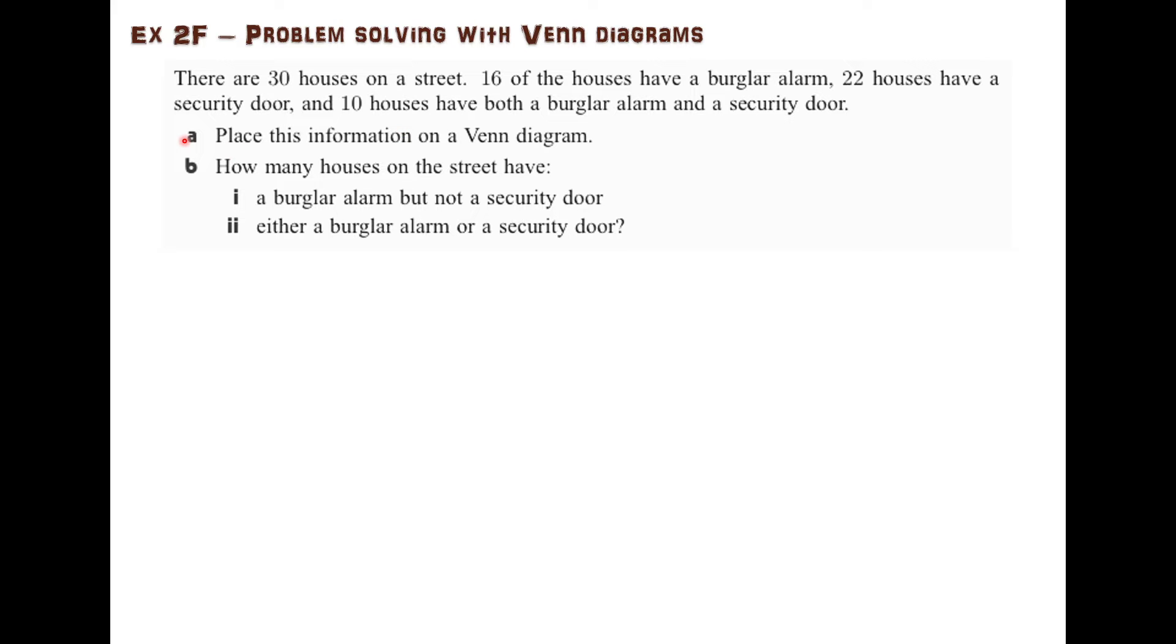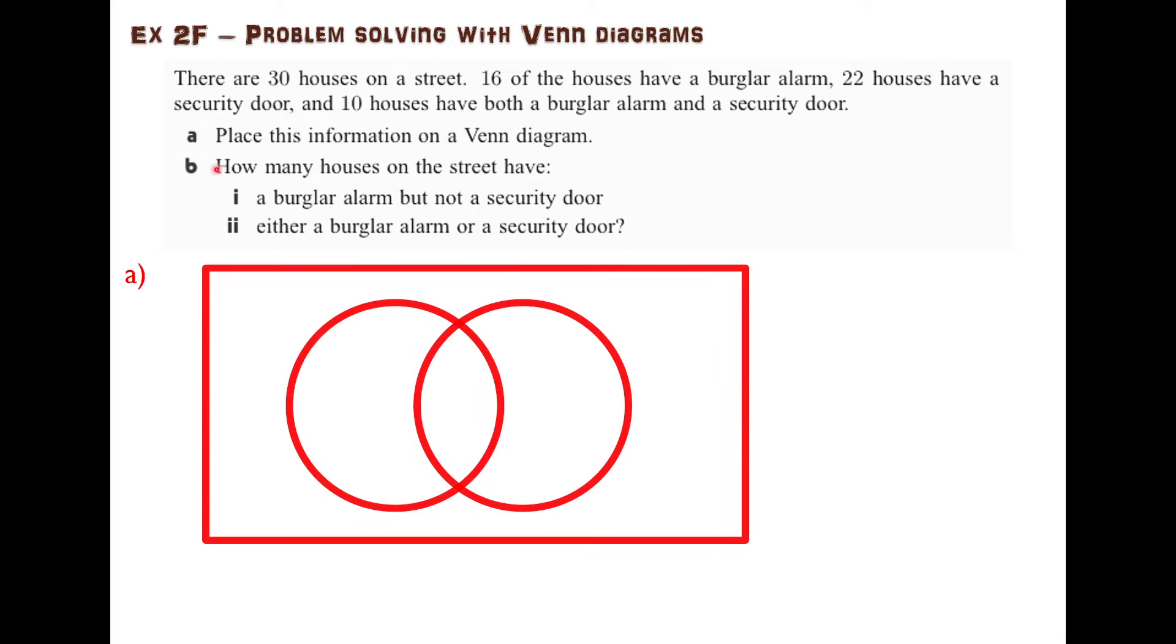Our first step is to place this information on a Venn diagram. We can draw a Venn diagram. There are two categories here, burglar alarm and security door, two sets.